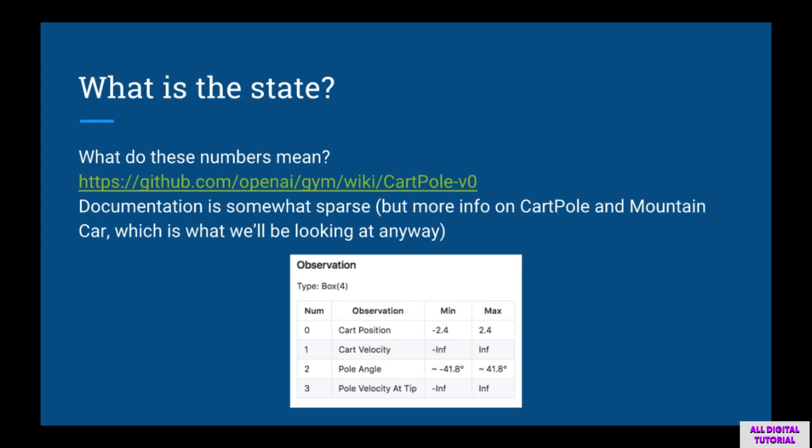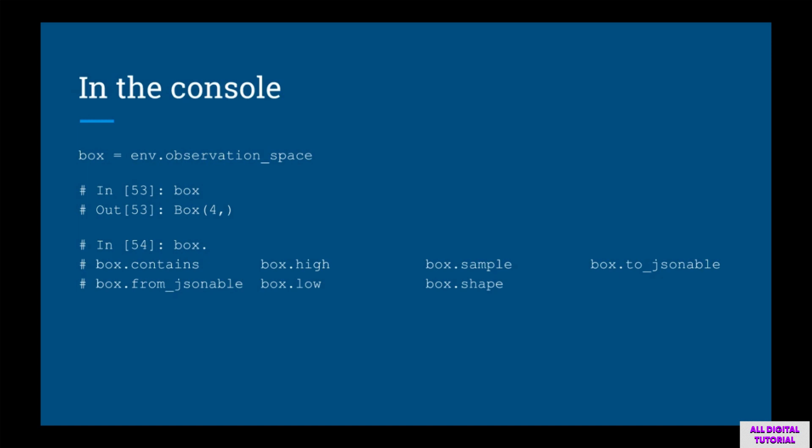You can also get the min and max values. None of these URLs you have to type out manually — you can copy and paste them from the Python script. You can also get some of this information from the console. If you do env.observation_space, you'll get back an object that says box 4. Assigning this to a variable called box, you can see a list of attributes and functions, call contains to check if a vector is part of the observation space, and look at high and low for max and min values. You can also grab a sample from the state space.